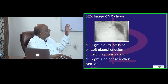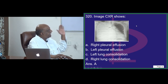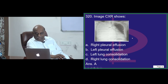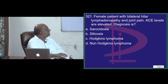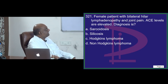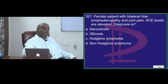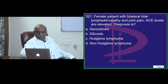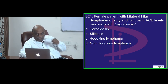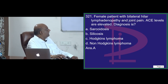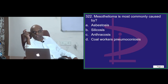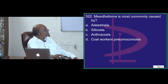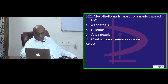It is a right pleural effusion with the trachea getting shifted towards the left — that is what you need to remember. Female patient, bilateral hilar lymphadenopathy, ACE levels elevated — even after all these clues, if you cannot answer, the examiner will be disappointed. It is sarcoidosis. Mesothelioma is most commonly caused by asbestosis — that is what you need to remember. Absolutely right.